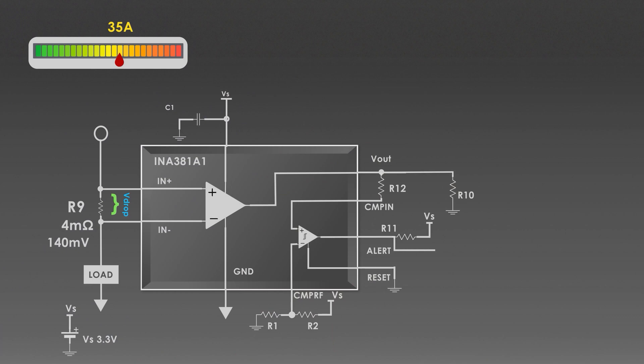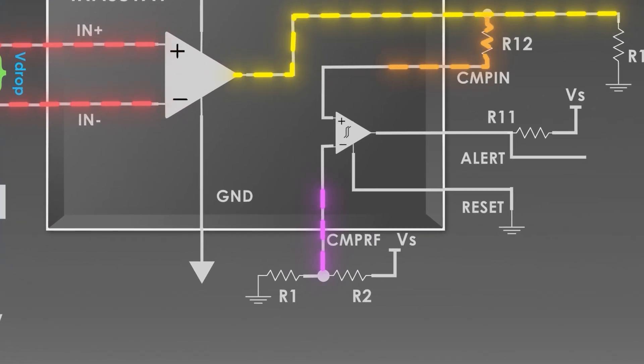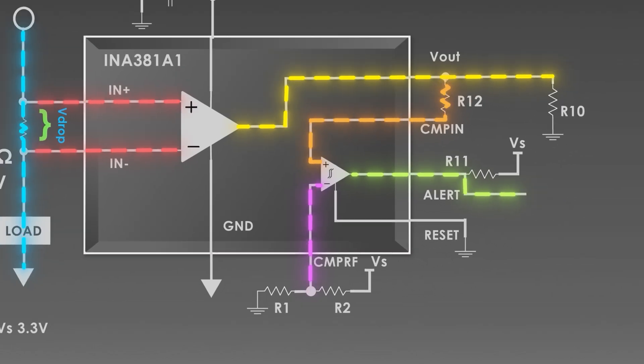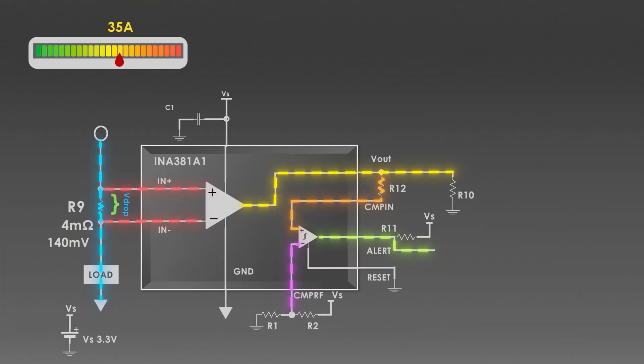That's where this comparator reference pin comes into picture. We can provide a reference voltage to this pin. And the internal comparator of the amplifier will compare this reference and output voltage of the sense amplifier. If the amplifier voltage is greater than the reference voltage, then only it gives the overcurrent alert.